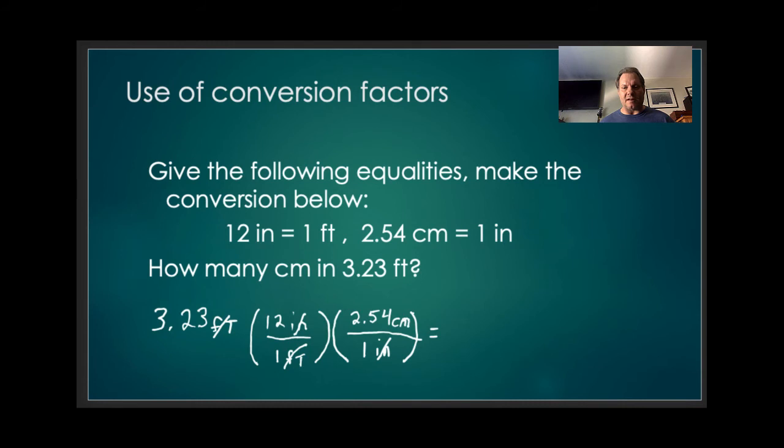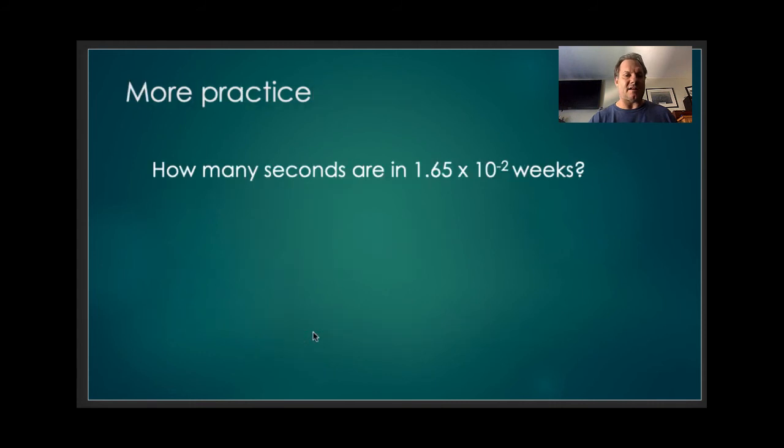So now inches cancel and I have the units centimeters remaining. So 3.23 times 12 times 2.54 divided by the quantity 1 times 1 gives me 98.5 and the unit remaining is centimeters. You notice that I started with 3 sig figs, I'm finishing with 3 sig figs. These guys are really not significant. They're exact definitions. So I'm not really restricted by the sig figs in that particular operation.